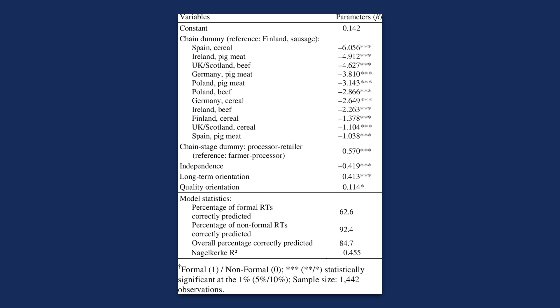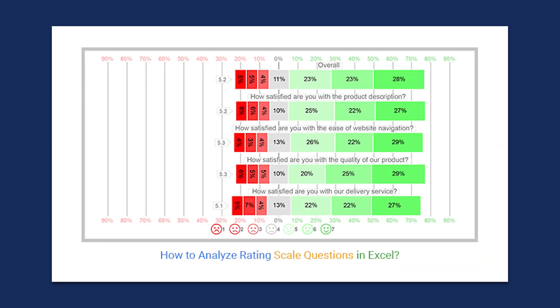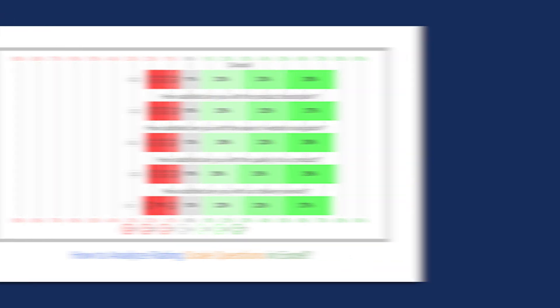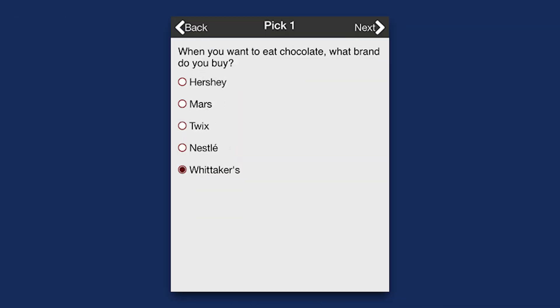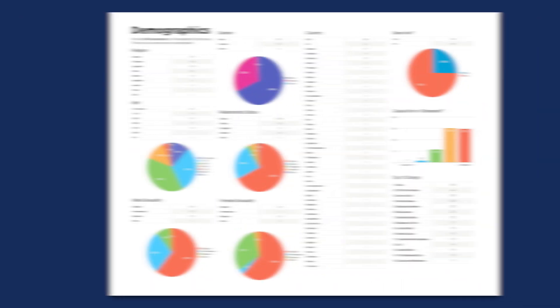Visualizing survey data effectively means using different types of charts for different types of survey results, such as binary, rating scale, multiple choice, single choice, or demographic results. Let's discuss each of them.